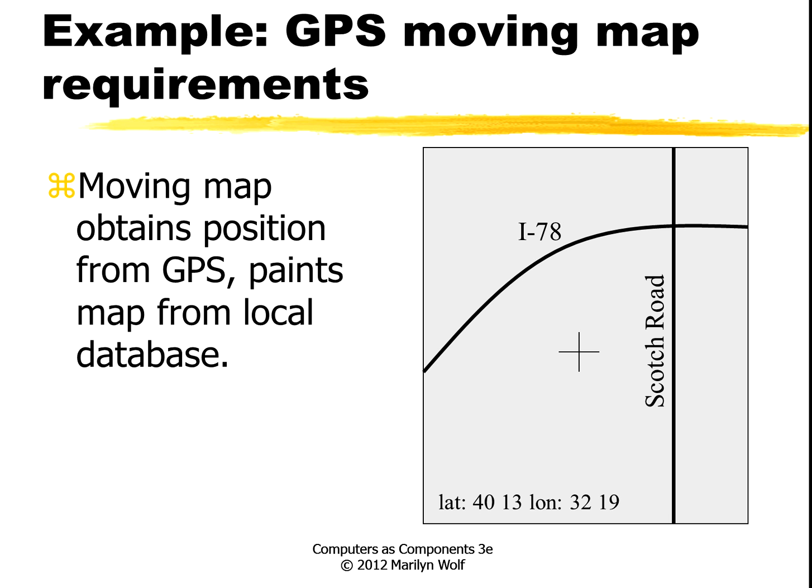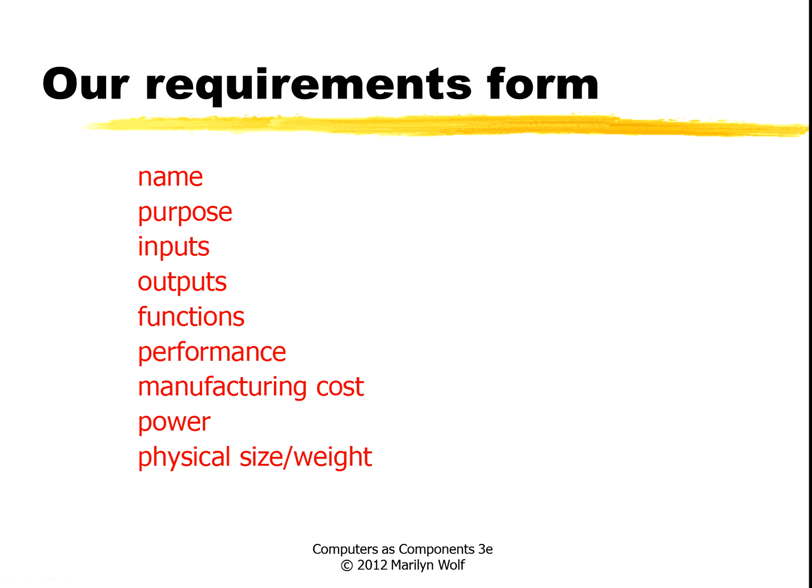You're familiar with these things, you know what they do, so that makes it easier to understand some of the steps in the design. Your moving map gets your position from GPS and has a screen, basically puts you in the middle and draws the roads and other things around you based upon your position. The information on the roads comes from a database that it stores locally. In Computers as Components, we use a simple form to capture some basic requirements of any system that we design.